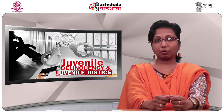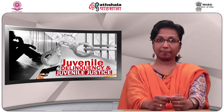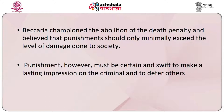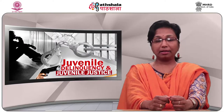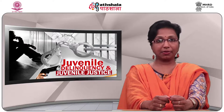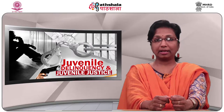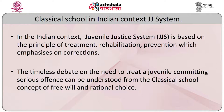The individual commits an offence out of choice based on awareness of potential consequences. Beccaria championed the abolishment of the death penalty and believed that punishments should only minimally exceed the level of damage done to society. Punishment, however, must be certain and swift to make a lasting impression on the criminal and to deter others. The need for a separate system to handle offending juveniles apart from adult criminals was a reflection of the neoclassical view that free will is dependent on circumstances such as the person's age.